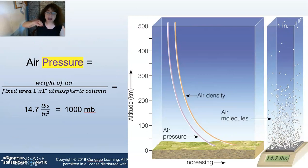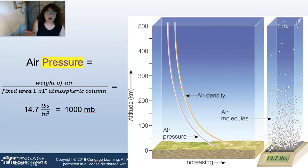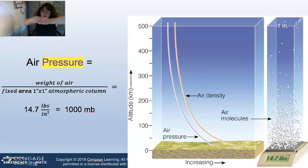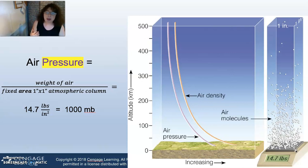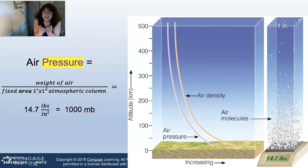A column of air for air pressure sits on top of a surface that has a surface area, and we can calculate air pressure for that surface area. If we fix the surface area at one inch by one inch from sea level in New York City all the way up to the top of the atmosphere, we can take the weight of the air in that column and divide it by that fixed area of one inch by one inch. We actually get a weight of 14.7 pounds on average — 14.7 pounds of air pushing on that one-inch space.